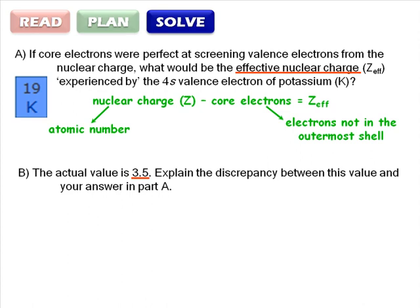Looking at potassium on the periodic table, we see that the atomic number is 19, and therefore the nuclear charge is 19. And since potassium is in the first column on the periodic table, all its electrons are core electrons except the one electron in the 4s orbital. That makes 18 core electrons.